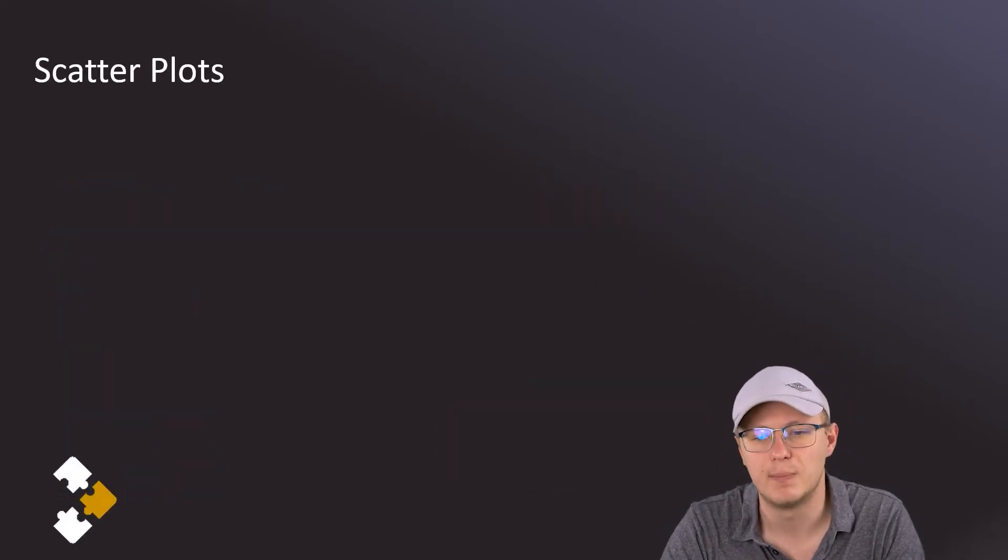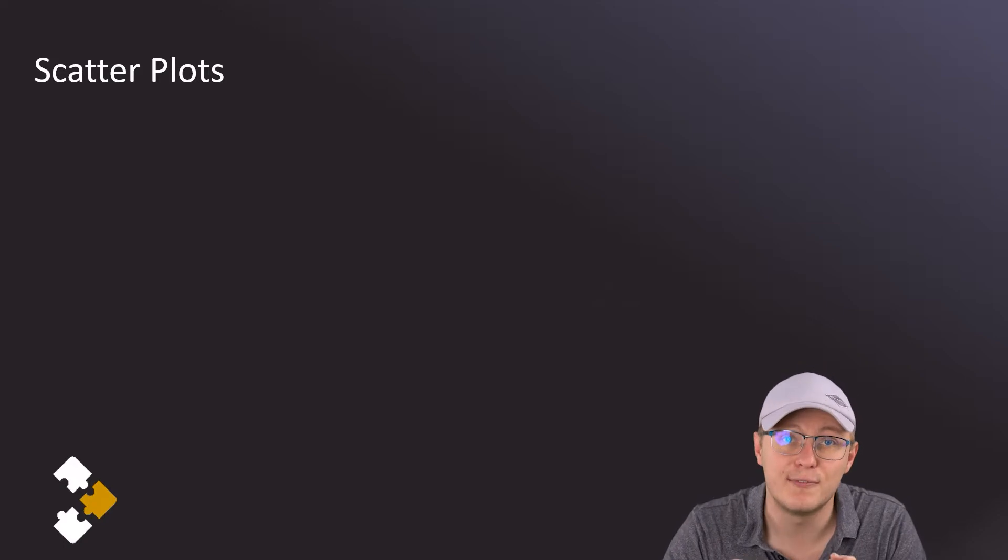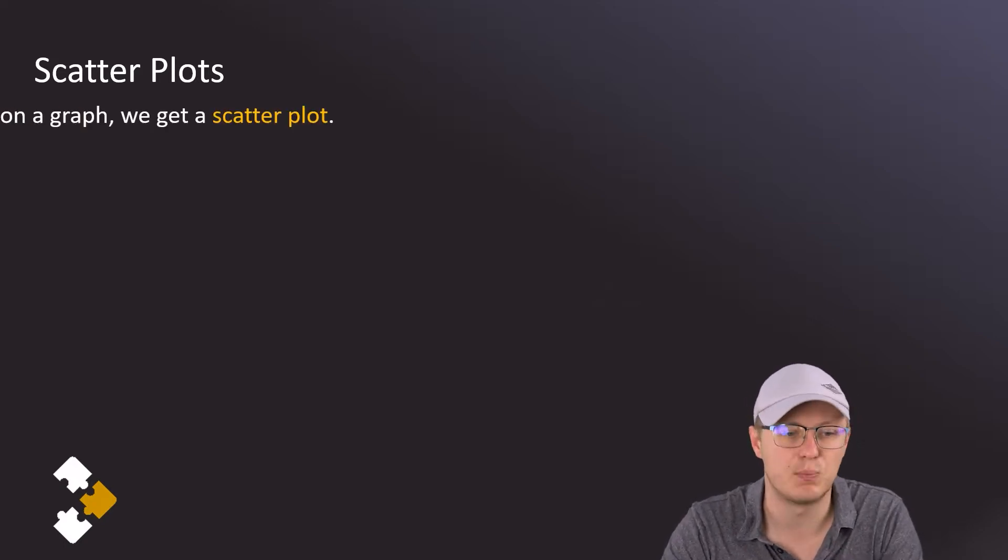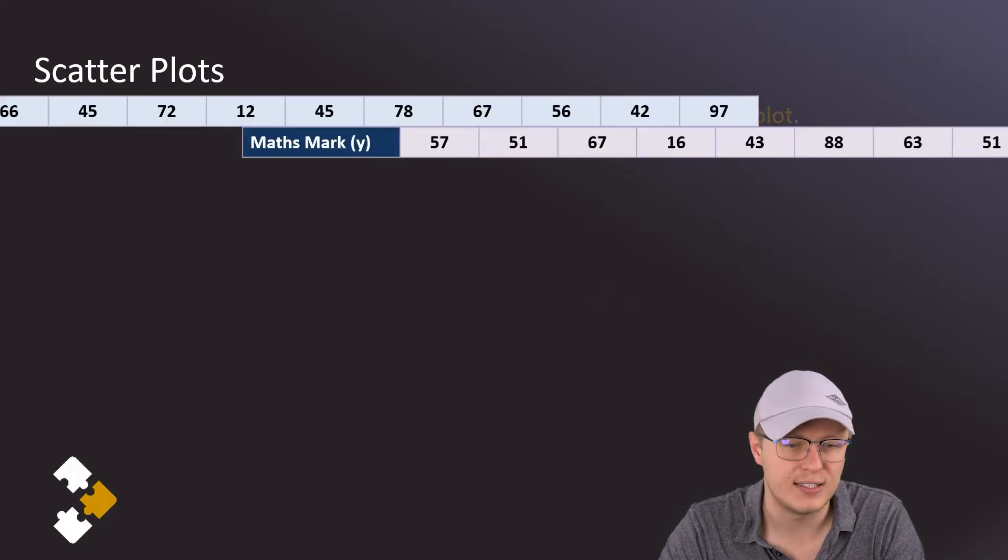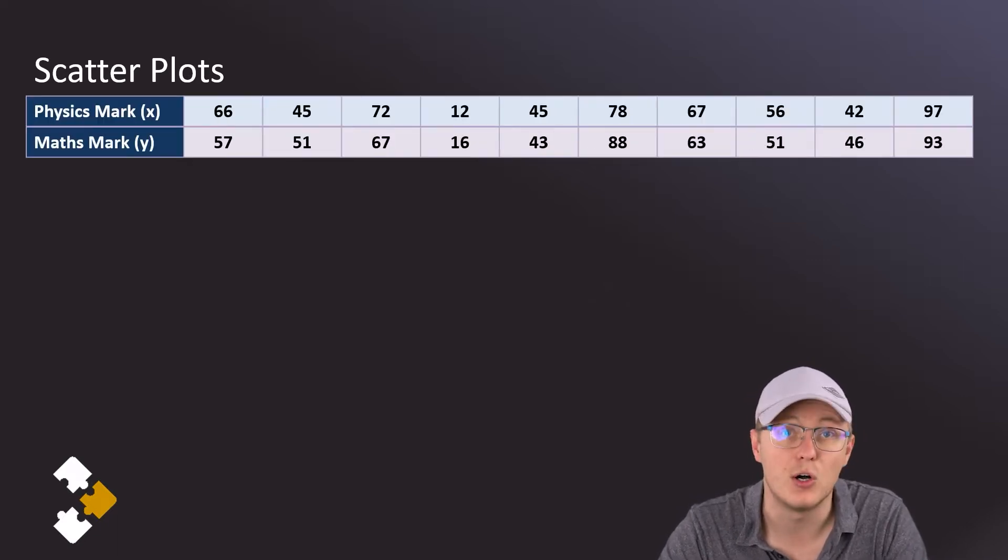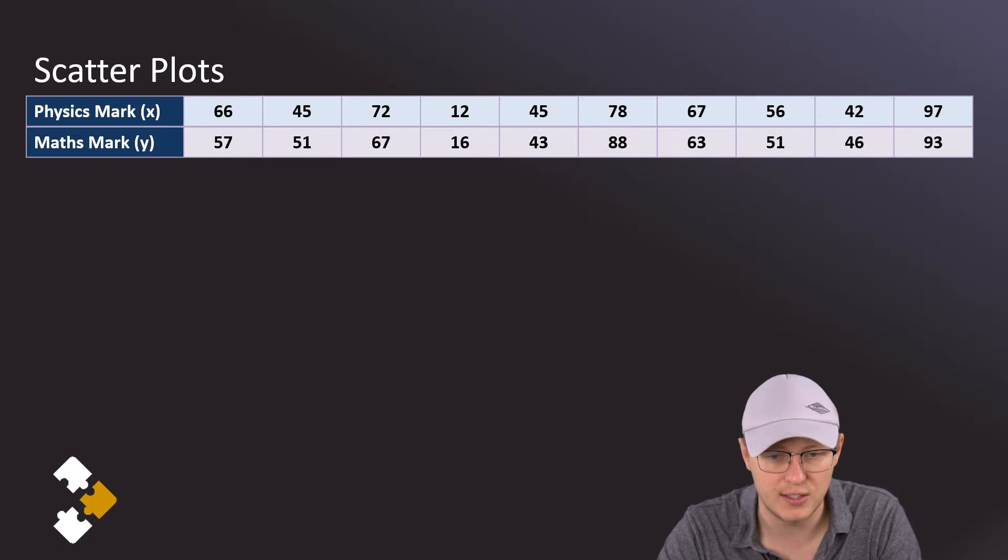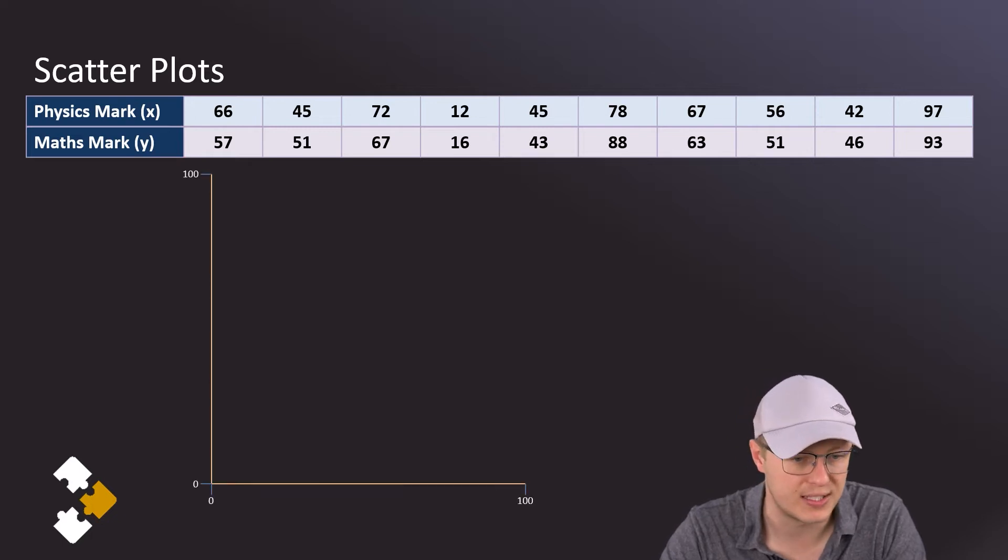If we have bivariate data, we can visually represent it with a scatter plot. Let's take these marks that we looked at earlier and put them on a scatter plot.